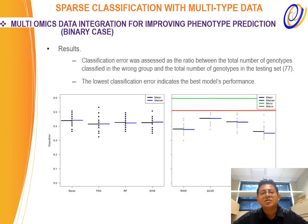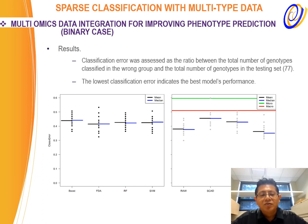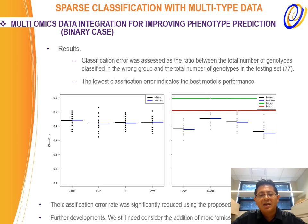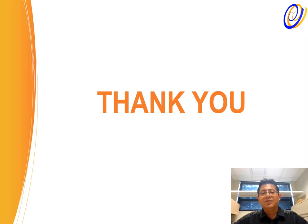Regarding the results, classification error was assessed as the ratio between genotypes classified in the wrong group and the total number of genotypes in the testing set — the lowest classification error indicates the best model. On the left side we have results for machine learning techniques: FDA, random forest, and support vector machine. On the right side we have results for the new method using raw data, SCAT, elastic net, and lasso. The classification error was significantly reduced with the proposed method. Further developments should consider integrating more omics. In general, the model we developed outperforms conventional machine learning. Thank you so much, and I'm more than happy to take questions.